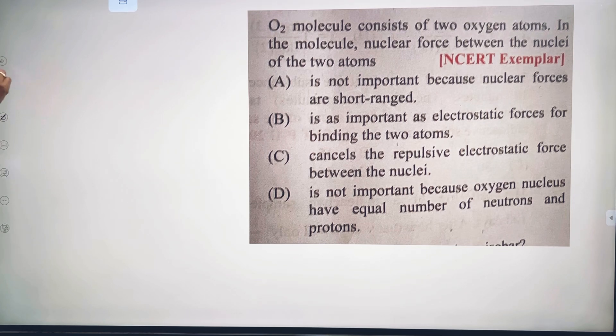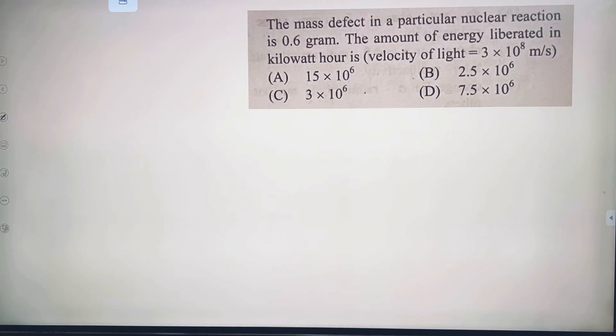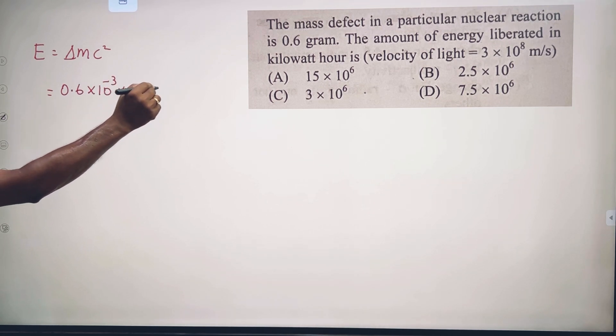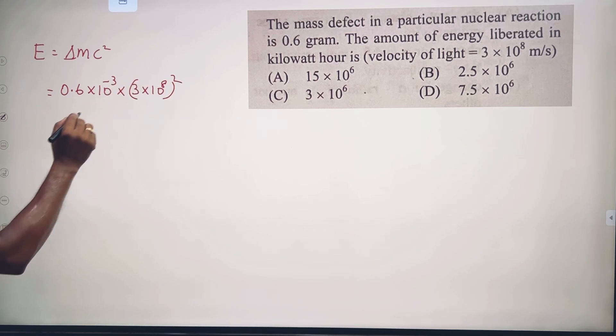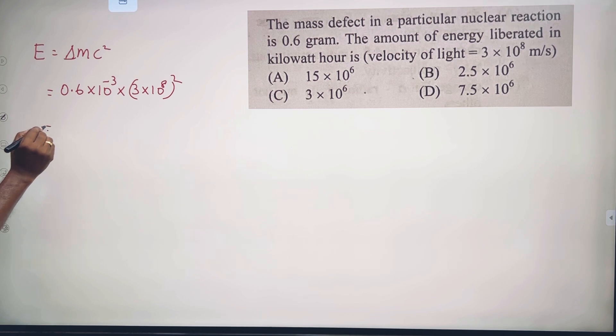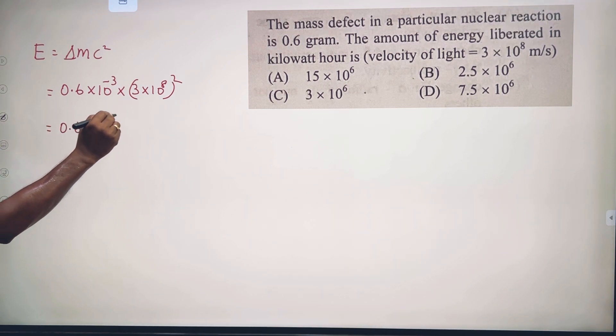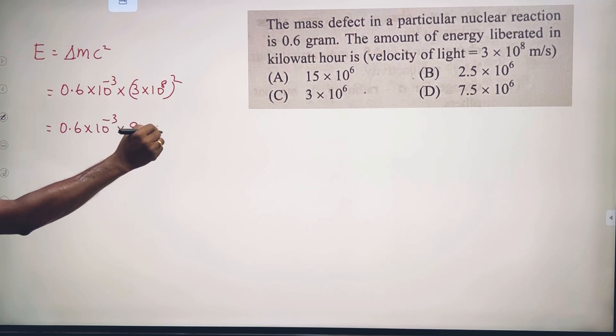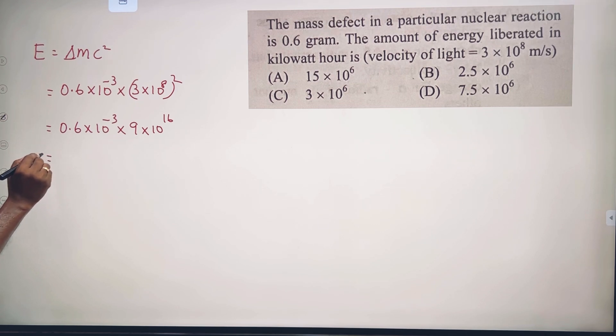The mass defect in a particular nuclear reaction is 0.6 grams. The amount of energy liberated in kilowatt hours: First convert mass to kilograms. Energy equals mc squared using Einstein's equation. So E equals 0.6 into ten power minus three times c squared, where c is 3 into ten power eight. That gives 0.6 into ten power minus three times 9 into ten power sixteen.